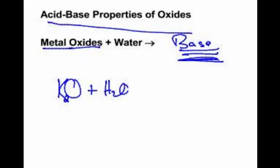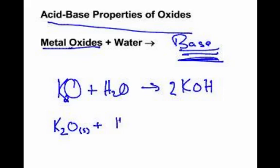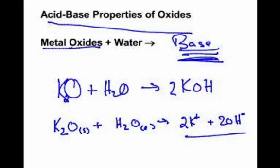That would be K2O. Reacts with water and makes a base. Bases are hydroxides, you must have the hydroxide. So it makes 2 KOH. While we're at product prediction, you would write K2O solid plus water liquid makes 2 K plus plus 2 OH minus. It's a strong base, and strong ones we write as dissociated.